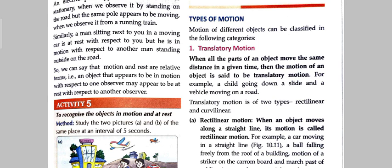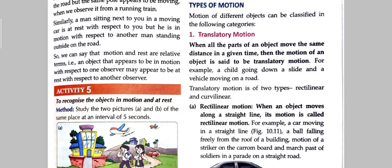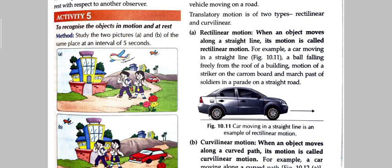Translatory motion is again divided into two types: rectilinear and curvilinear. The name means that rectilinear is straight line and curvilinear is curved line. First, rectilinear motion: when an object moves along a straight line, its motion is called rectilinear motion. For example, a car moving in a straight line, a ball falling freely from the roof of a building, motion of a striker on the carom board, and march past of soldiers in a parade on a straight line.